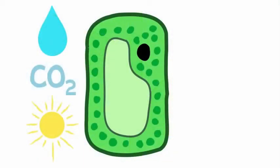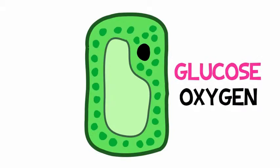So now the leaf's palisade cells have water, carbon dioxide, and sunlight, all they need to photosynthesize and make glucose, their food, and oxygen.